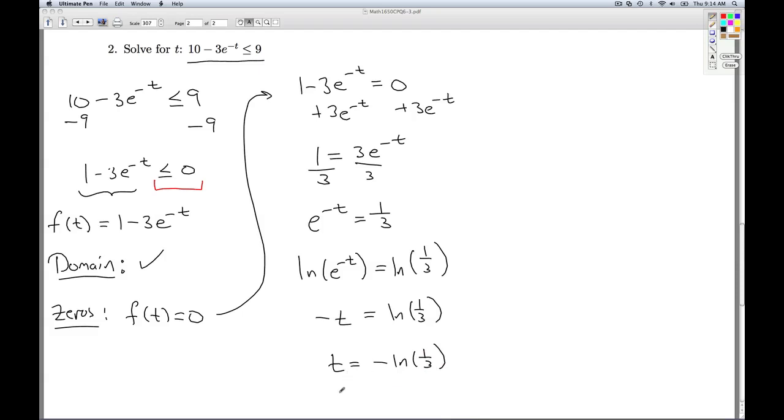Now since we're going to be putting these things on a number line for test values, I want to simplify this as much as I can. So I can use log properties to write this as negative natural log of 3 to the minus 1 power, and then use the power rule to bring the negative down front to cancel the negative that's already there. And so I get t equals natural log of 3.